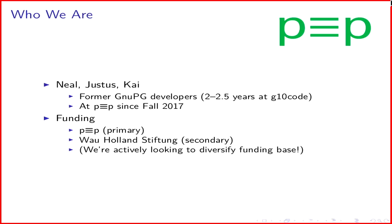So who is working on this project? There are three of us working on it more or less full-time — Justus and Kai. We were all former GNU-PG developers; we worked there for two, two-and-a-half years. Since the fall of 2017, we've been at PEP, which stands for Pretty Easy Privacy, working on tools to make email encryption easy to use for everyone. Our funding comes primarily from PEP — there's a company aspect and also a foundation — and the Wall-Holland Stiftung is also providing some funding. We hope to diversify our funding base in the medium term.